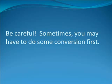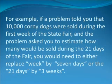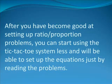Be careful. Sometimes you may have to do some conversion first, which is another ratio-proportion problem, as we showed earlier. For example, if a problem told you that 10,000 corny dogs were sold during the first week of the state fair, and the problem asked you to estimate how many would be sold during 21 days of the fair, you would need to either replace week by seven days, or the 21 days by three weeks.